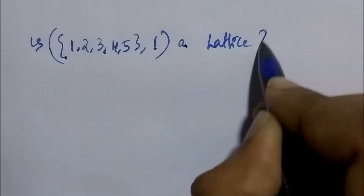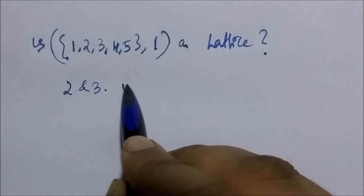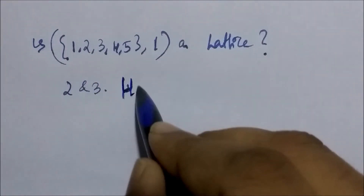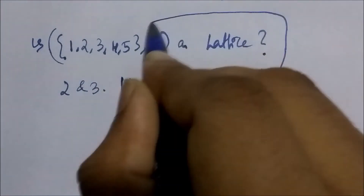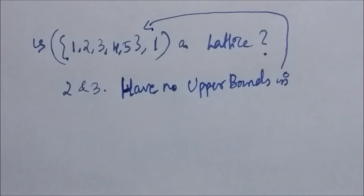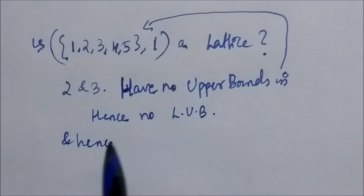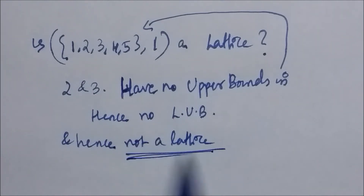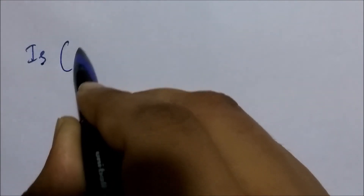Is the partially ordered set ({1, 2, 3, 4, 5}, divides) a lattice? If you take the elements 2 and 3, they have no upper bound in the set {1, 2, 3, 4, 5}. Since they have no upper bound, they have no least upper bound, and hence this is not a lattice.